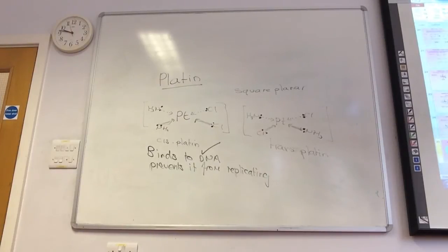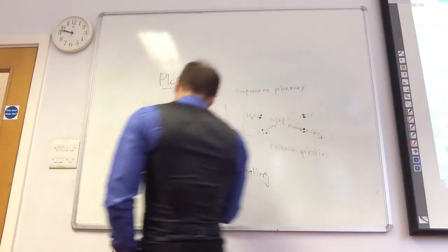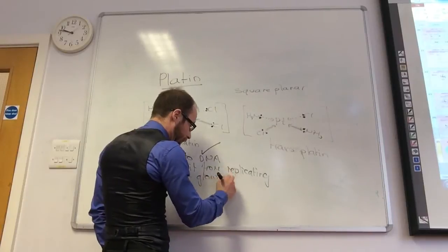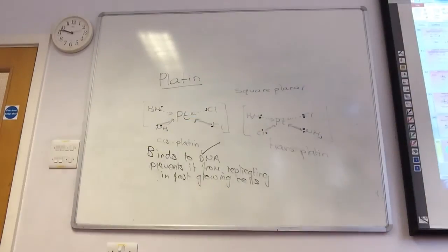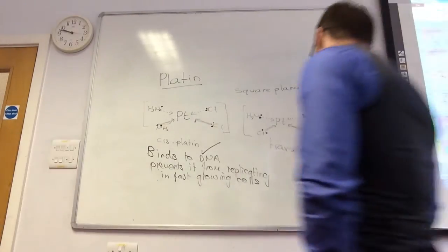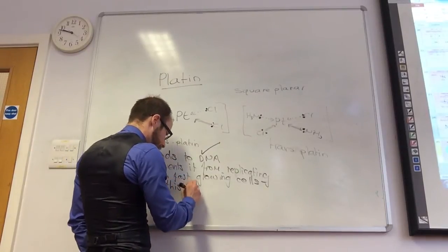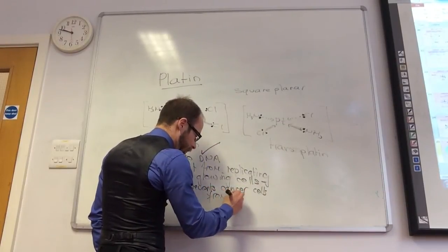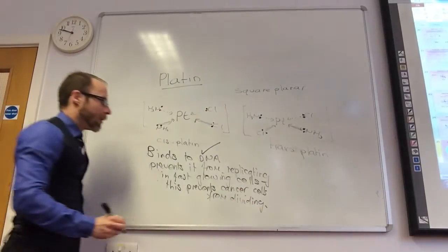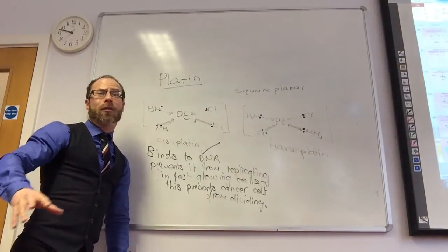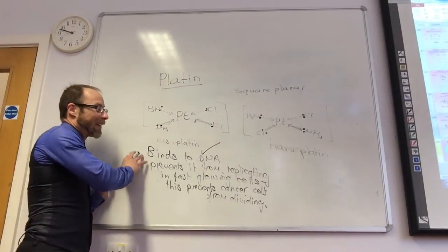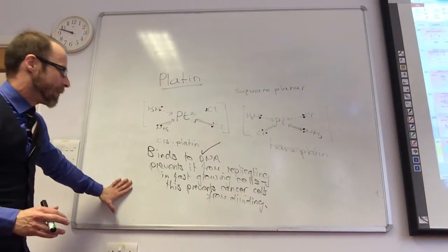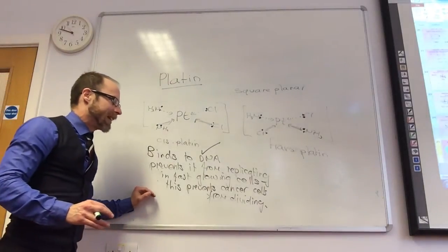So does trans just not react with that? Well, it does — it prevents replication in fast-growing cells. It's only cis-platin that works. It binds to the DNA and prevents it from replicating in the fast-growing cells, and this prevents the cancer cells from dividing.